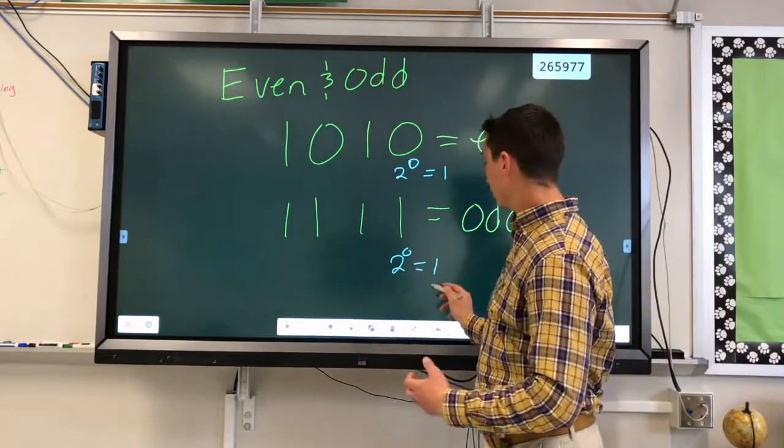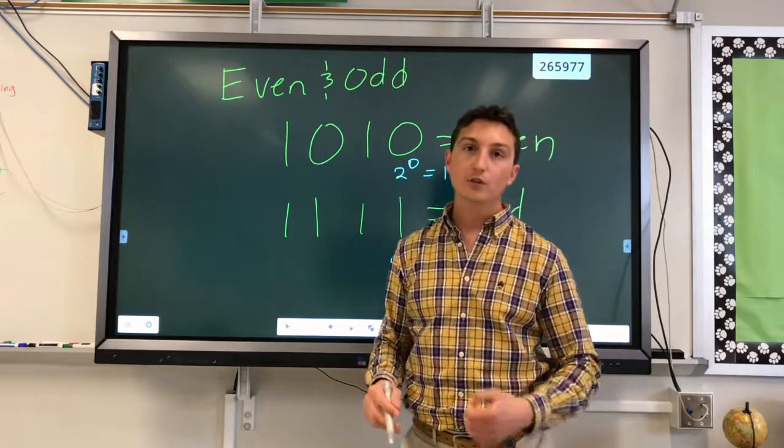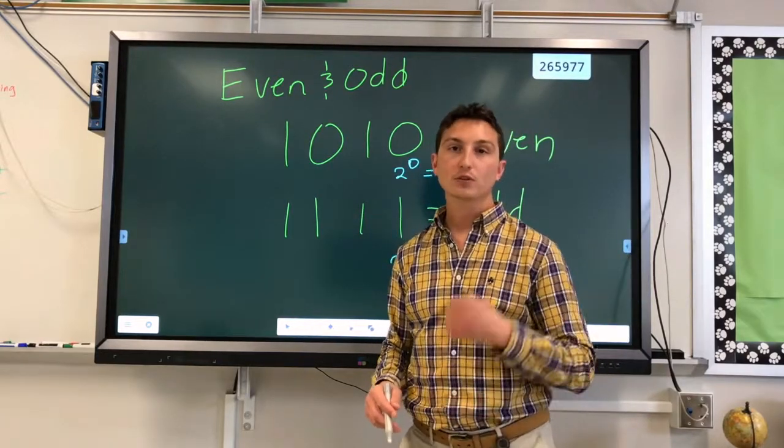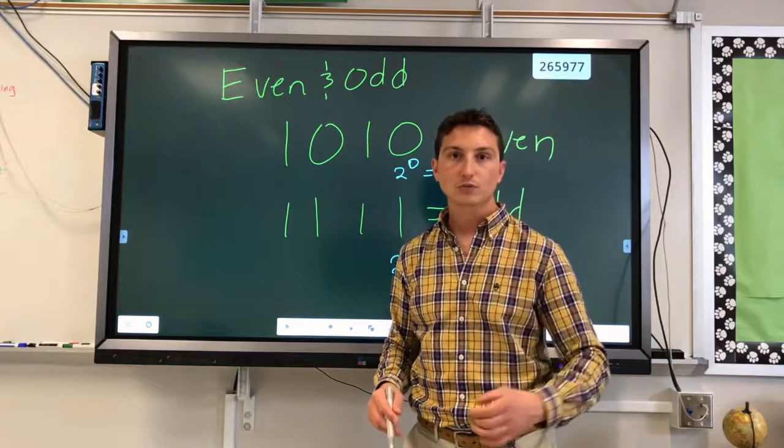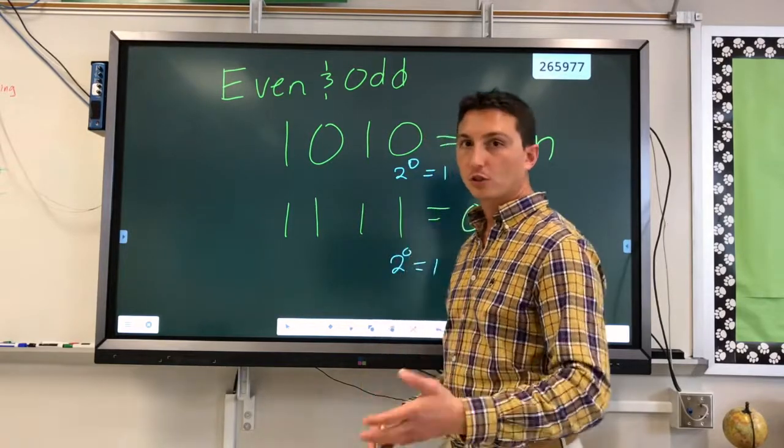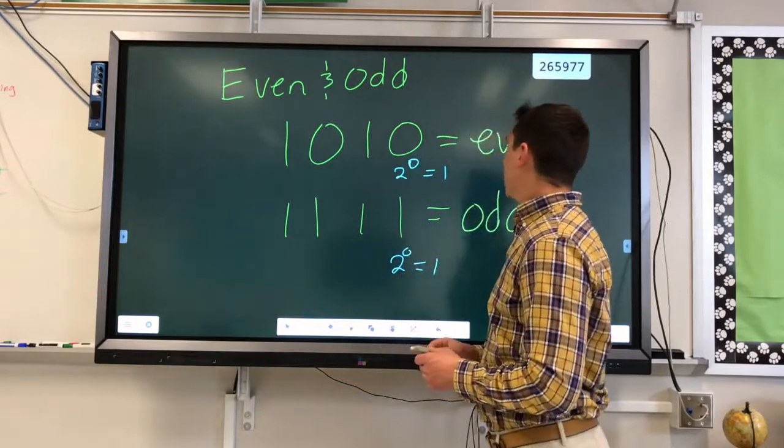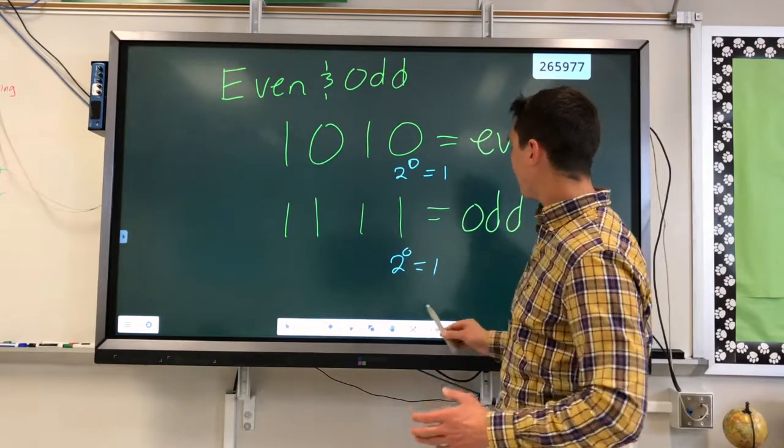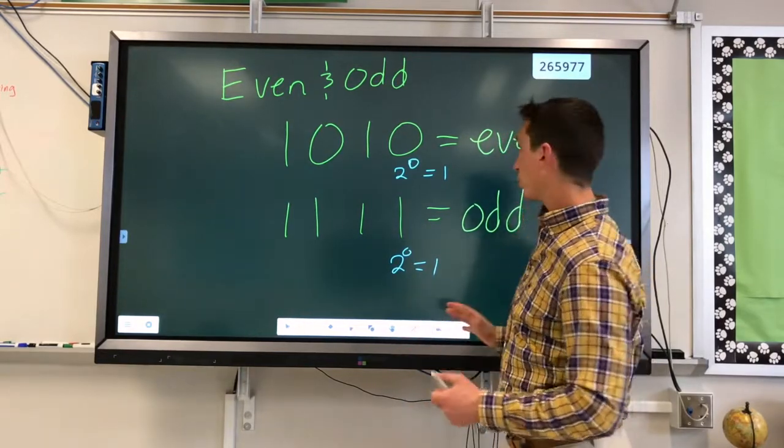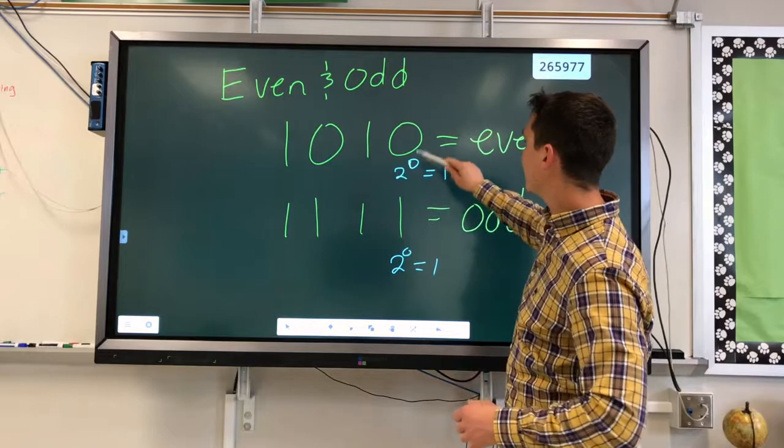Because after here, we start doubling. 1 doubled is 2, 2 doubled is 4, 4 doubled is 8, 8 doubled is 16, 32, 64, 128, 256, so on and so forth. Well, this is kind of like a principle of how numbers work. Being that, this is the only odd number.